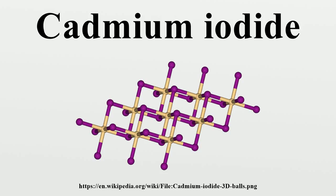Crystal structure: In cadmium iodide, the iodide anions form a hexagonal close-packed arrangement while the cadmium cations fill all of the octahedral sites in alternate layers. The resultant structure consists of a layered lattice. This same basic structure is found in many other salts and minerals. Cadmium iodide is mostly ionically bonded but with partial covalent character. Cadmium iodide's crystal structure is the prototype on which the crystal structures of many other compounds can be considered to be based.